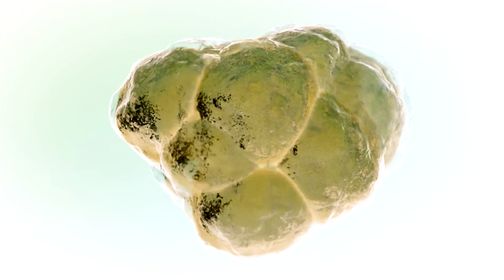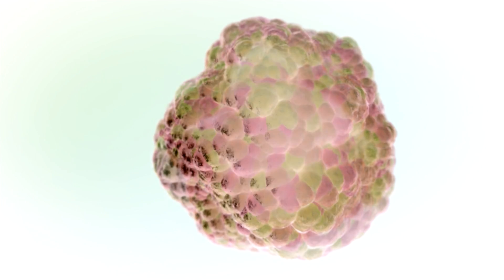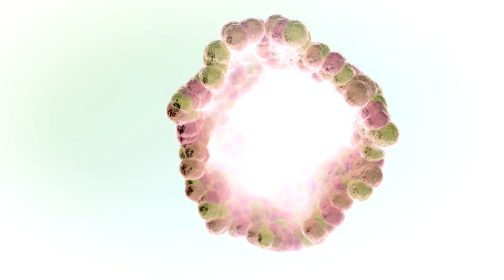Organoids are really small versions of our organs. We make them by taking stem cells from individual organs. We grow them. We can grow them forever. They get bigger and bigger, but they always look like the original organ. So we can use them for research.